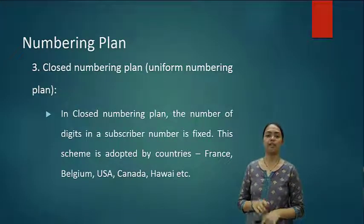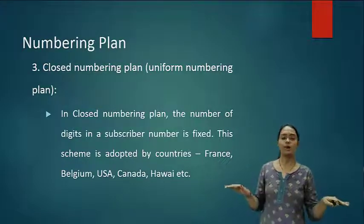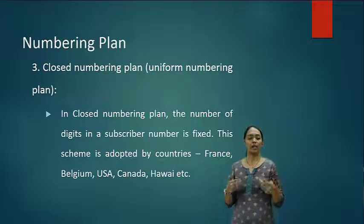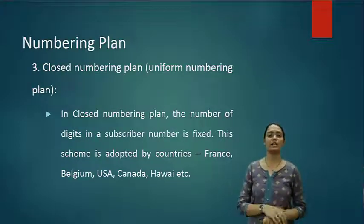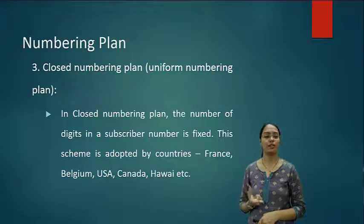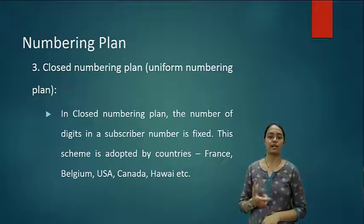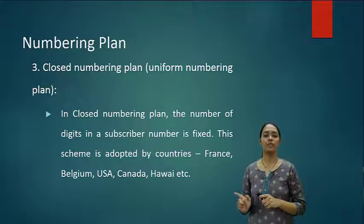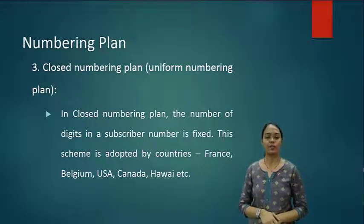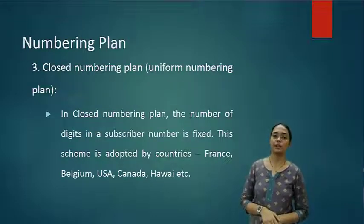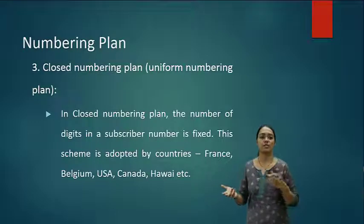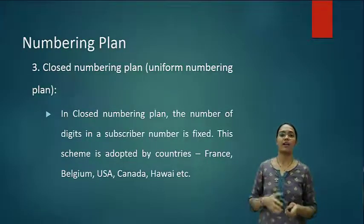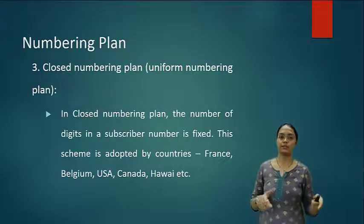Another type is the closed numbering plan. This is a uniform numbering plan widely used by many countries where the number length is fixed and there cannot be any change in the number. Like in India we have a 10-digit mobile phone number, which is uniformly accepted by countries using the closed numbering plan. The number of digits in a subscriber number is fixed, and this scheme is adopted by countries like France, Belgium, USA, Canada, and Hawaii.